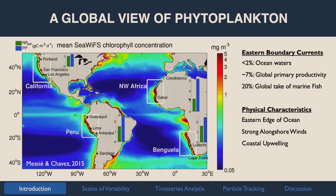This is a figure from a paper by Messi and Chavez showing the mean distribution of chlorophyll over parts of the globe. The colors represent chlorophyll concentration — warm colors are high values, cold colors are low values — and it's worth noting this is on a logarithmic scale, so the difference between really red and slightly less red is actually larger than the difference between yellow and blue. What stands out are areas along the coasts with lots of high phytoplankton or chlorophyll.